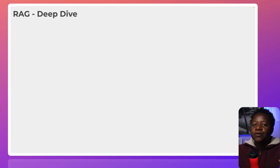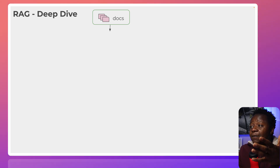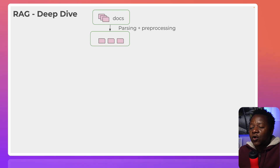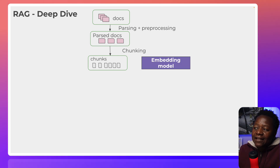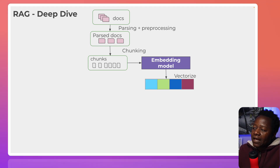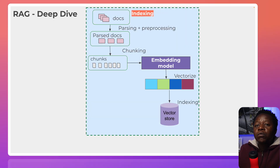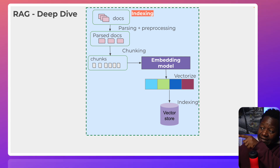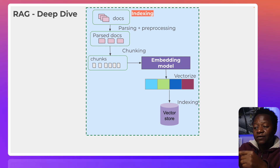For a deeper dive on RAG: at the top level we have documents. We chop, parse, and pre-process them into smaller documents — this is called chunking, just cutting everything into smaller pieces. These chunks are put through an embedding model — this is called vectorization. That information is saved into vector databases, and this whole process is called indexing — an index is created, just like the index in the back of a book, so it's easier to find what we're looking for.